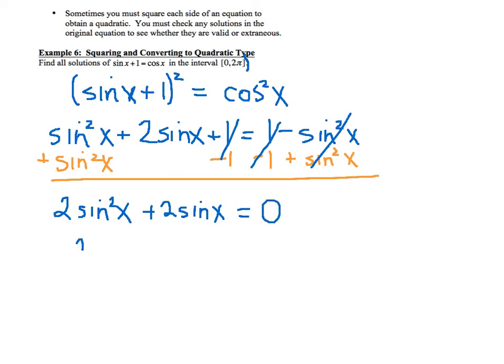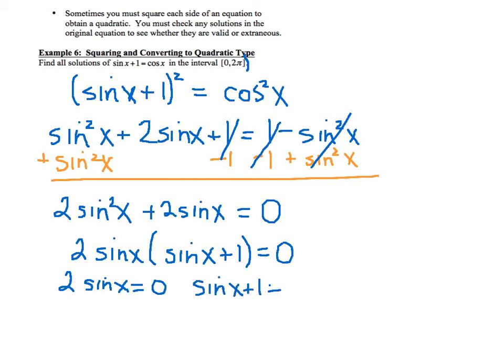So what you can do now is you can factor out a GCF, because this looks a little bit nicer now. You've got 2 sine of x. That's going to give you sine of x plus 1 equals 0. So you set each of these equal to 0. You get 2 sine of x equals 0, and sine of x plus 1 equals 0.